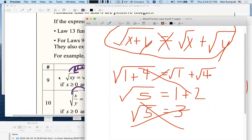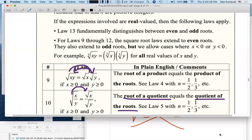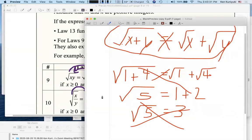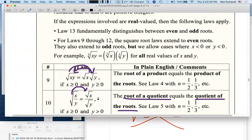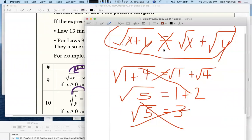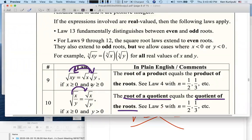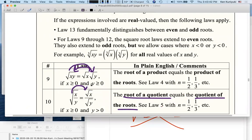So radicals break up over products and quotients, but not over sums or differences for that matter. Be careful. It's often the case that we can do things with products and quotients, but not sums or differences. That's also true for exponents.